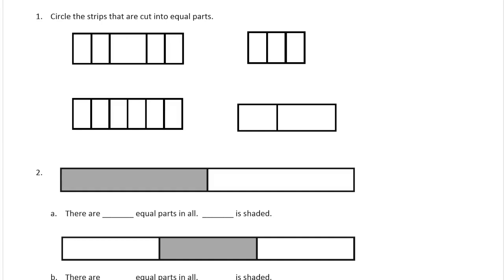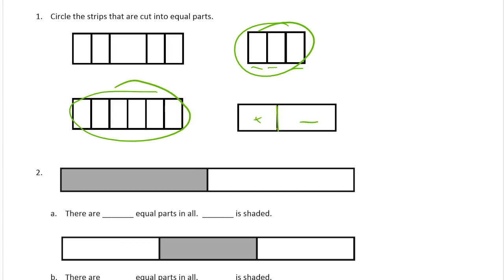Well, this one — these pieces look pretty much the same as each other, and so do these. But this guy here is definitely smaller than that one, and this one here is definitely too big, bigger than the other, so they're not all equal parts. All the parts have to be equal.